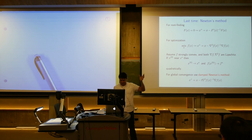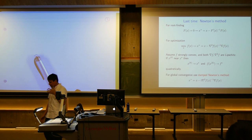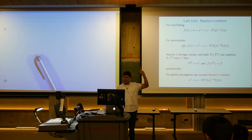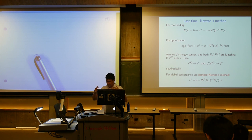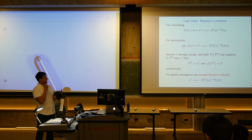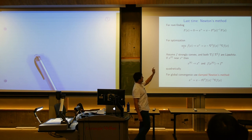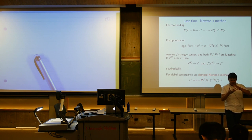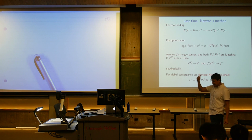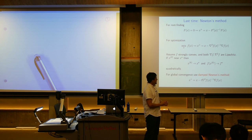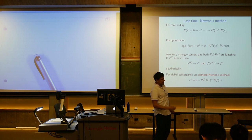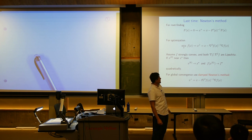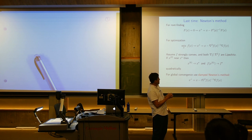A recap of something we did last time. The barrier method is going to rely on Newton's method heavily, so here's a quick recap. There are two versions of Newton's method. The first is as an algorithm for root finding: if you are trying to find a solution to a system of equations F(x) = 0 — a system of n equations, n unknowns, typically nonlinear — then Newton's method gives the update by subtracting the Jacobian inverse times F(x).